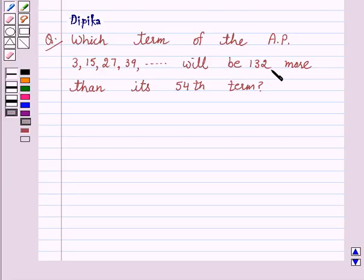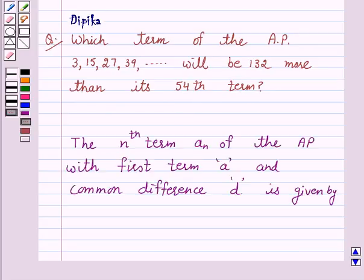will be 132 more than its 54th term. Now we know that the nth term AN of the AP with first term A and common difference D is given by AN equals A plus (N minus 1) into D. This is the key idea behind the question.